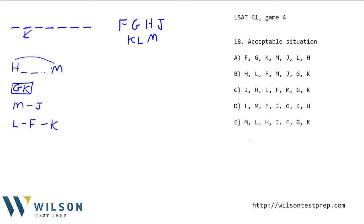G and K are consecutive — I've put a box around them to remind me that they act as a block that might be separated. M is before J, and L is before F, which is before K. Our last condition is that L cannot be in the second spot.